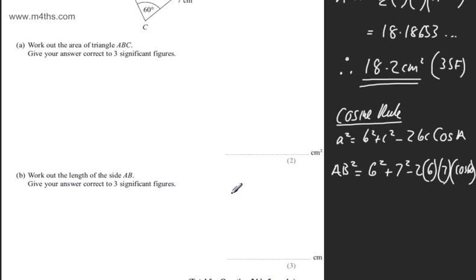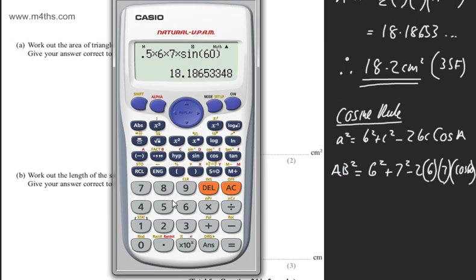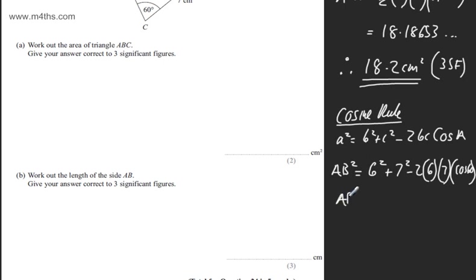So let's go ahead and put that now into a calculator. So we're going to have 6 squared plus 7 squared. Then we're going to have minus now, and it's entirely up to you on how you want to type this in. Just typing it like so would be perfectly fine. And that's going to give me that AB squared is equal to 43.